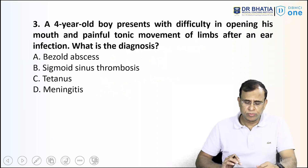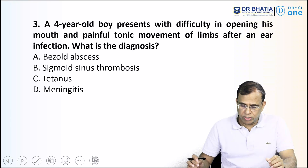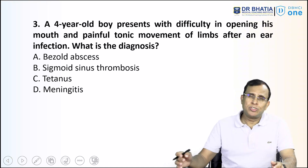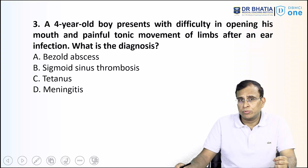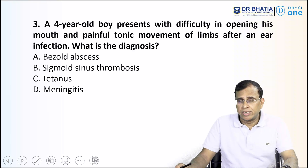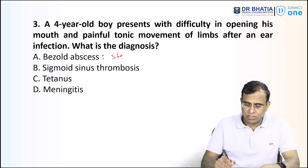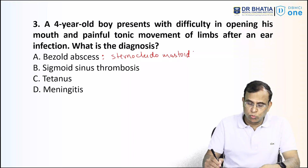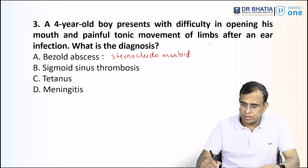Question number three: a four-year-old boy presented with difficulty in opening his mouth and painful tonic movement of the limbs after an ear infection. What is the diagnosis? Options are Bezold's abscess, sigmoid sinus thrombosis, tetanus, or meningitis. Truly speaking, this is not an ENT question — they tried to confuse you by mentioning the ear infection, and three out of four choices are related to the ear. Bezold's abscess is an abscess of the sternocleidomastoid muscle, which has nothing to do with opening or closing of the mouth or limbs, so it's ruled out.